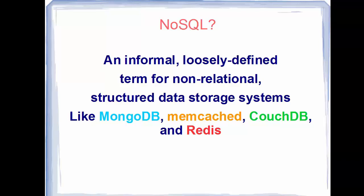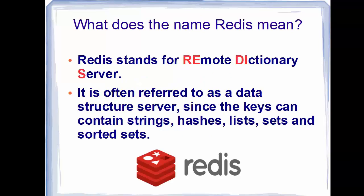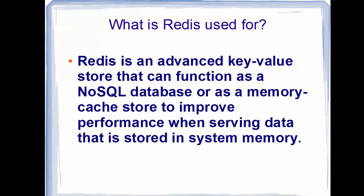In NoSQL databases, data can be stored in a non-relational way. The name Redis stands for Remote Directory Server. It is often referred to as a data structure server since the keys can contain strings, hashes, lists, sets, and sorted sets.